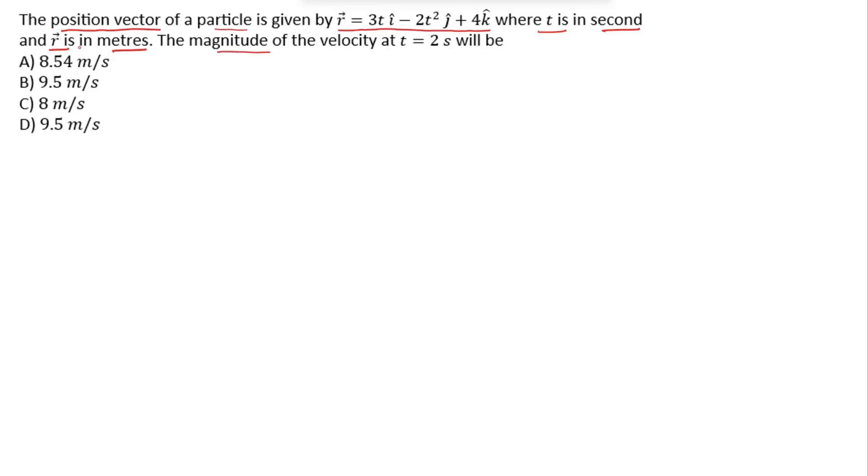The magnitude of the velocity at t equals 2 seconds will be. Here four options are given. So first of all, let's write the given terms. In the question, position vector of a particle is given as r vector equals 3t i cap minus 2t squared j cap plus 4k cap and time is given as t equals 2 seconds.